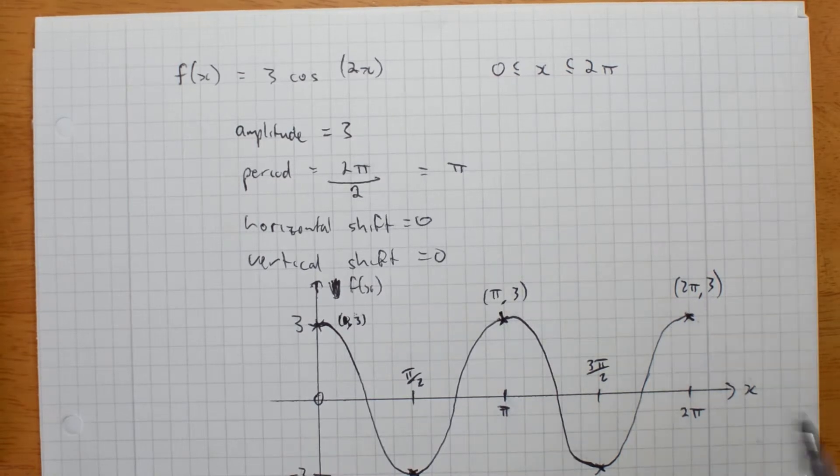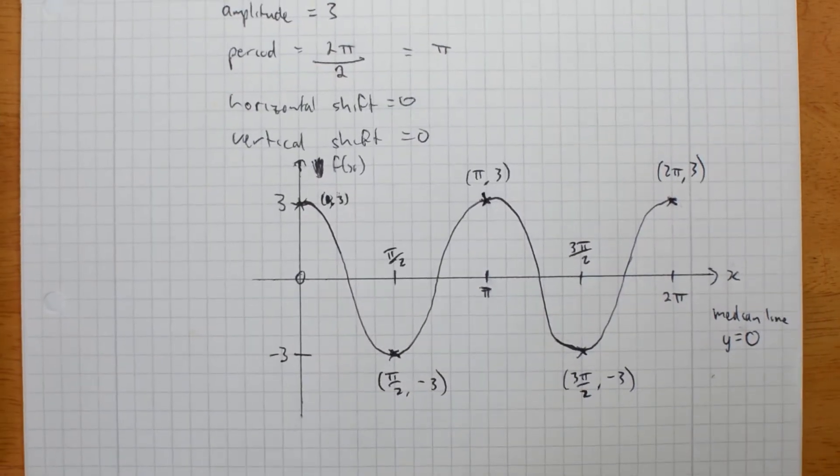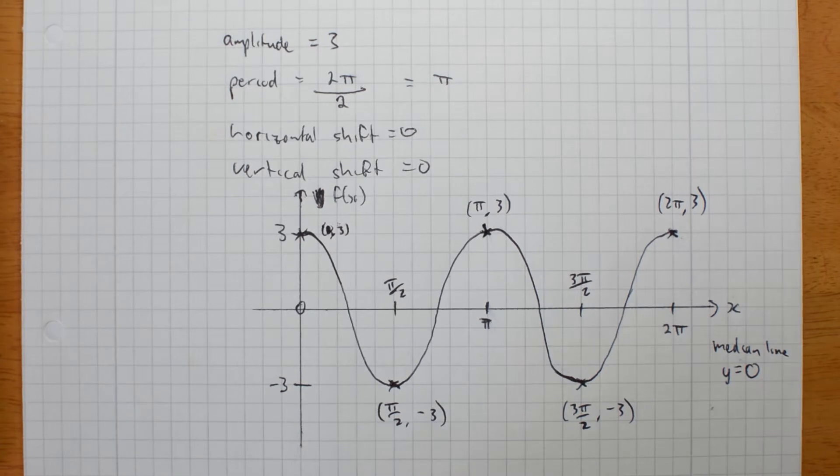The median line through the centre, because there's no vertical shift, the median line is y equals 0. Sorry, I don't think you can see everything there. That should be better. The median line is y equals 0. It's the line through the centre.